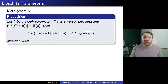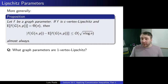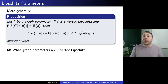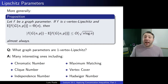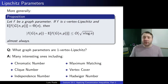This is a general property: if you have a graph parameter that's c-vertex Lipschitz for some constant c, and the expectation is linear, then it's concentrated within O(√n log n) almost always. This applies not only to the chromatic number but to many other graph parameters. Examples of 1-vertex Lipschitz parameters include the chromatic number, clique number, independence number, maximum matching size, vertex cover, Hadwiger number, and so on — all are well concentrated around their expectation.